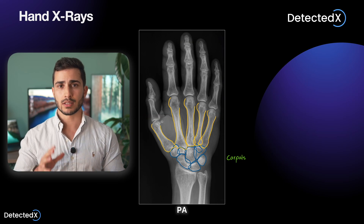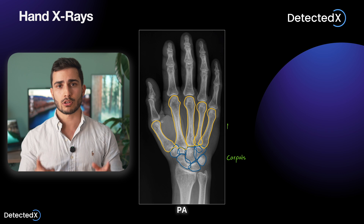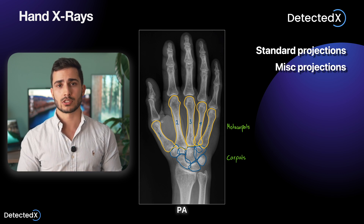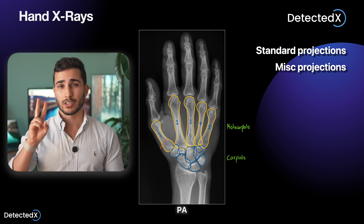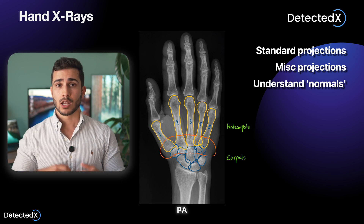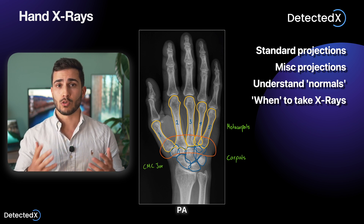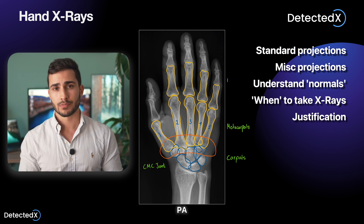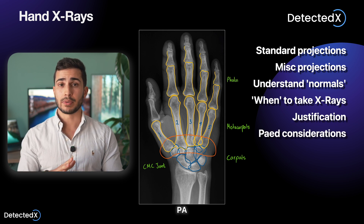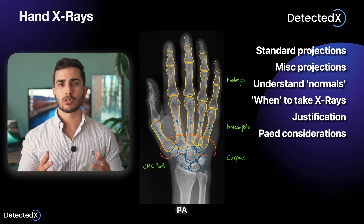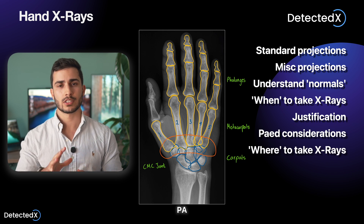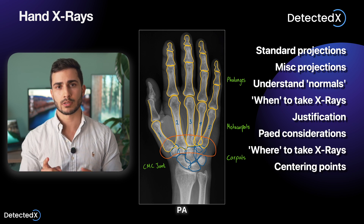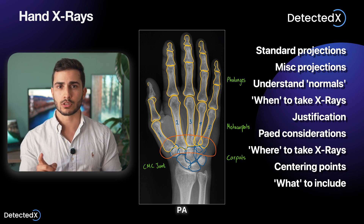In the second module I'll introduce the radiography for that region — that is, what the standard and miscellaneous projections are, what a normal x-ray looks like, when you would take, exclude or add projections and their justifications for it, covering any pediatric considerations and talking about where you would take them, in addition to the centering points for each view and what to include to acquire a diagnostic image.